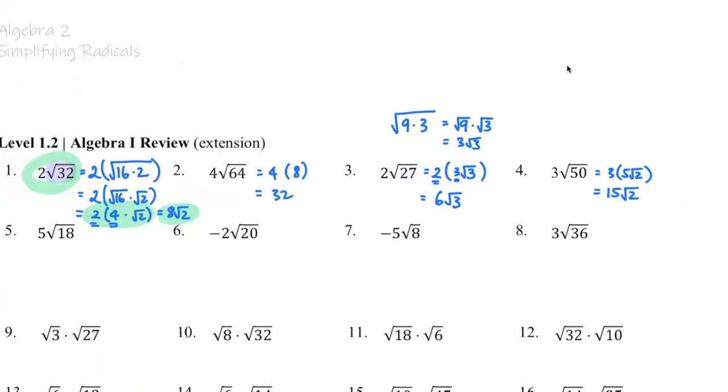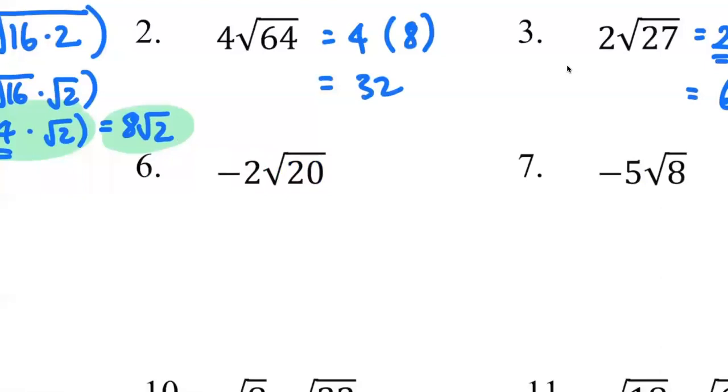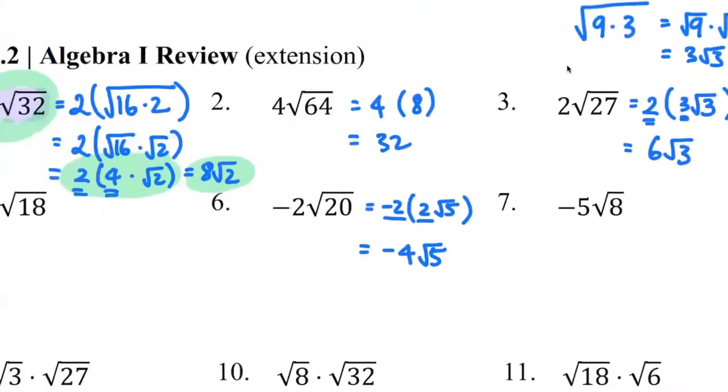What happens if you have a little negative number in the front? Like number six. Well, same thing. We say, hey, what is square root of 20? Think about 20 as four times five. Four times five gives you two root five. So square root of 20 is the same thing as two times square root of five. So this times this, you get negative four root five.